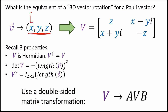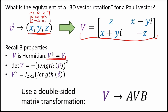We've seen 3D rotations done with 3×3 rotation matrices. The question now is: how do we perform a 3D rotation on this 2×2 matrix representation of a vector? The result must remain Hermitian, and since the determinant equals the negative squared length, a rotation cannot change the determinant.